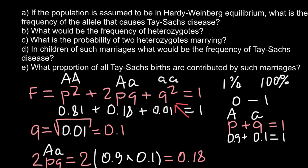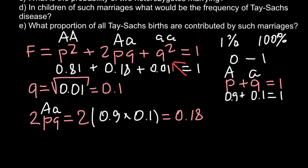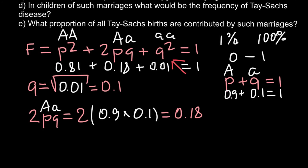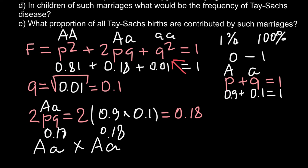Question B: What is the frequency of heterozygous individuals? We found this is 0.18 or 18 percent. Question C: What is the probability that two heterozygous individuals would meet each other and marry? The probability equals the frequency of that genotype multiplied by itself: 0.18 × 0.18 = 0.0324, meaning about 3% of all matings would be between two heterozygous people.